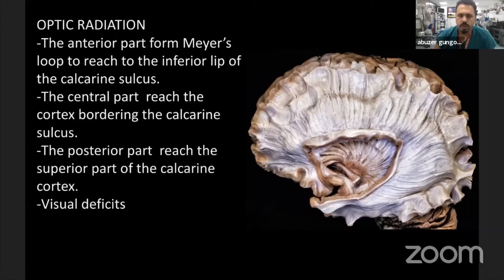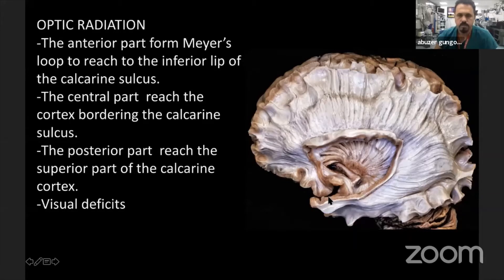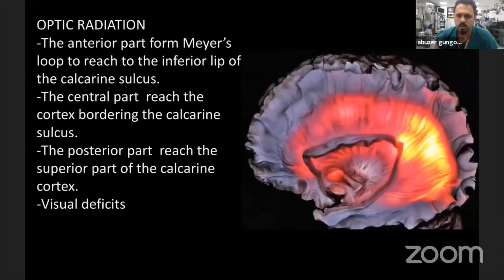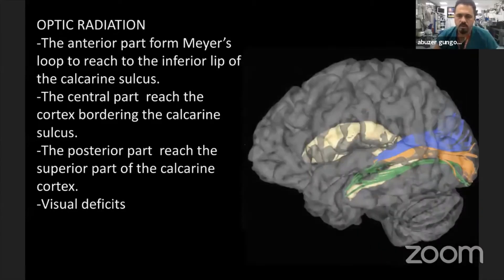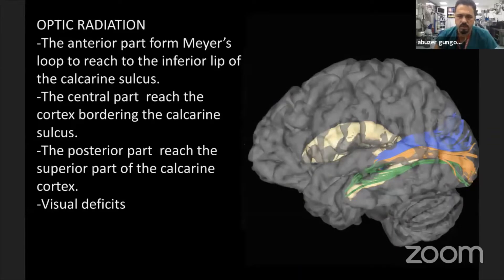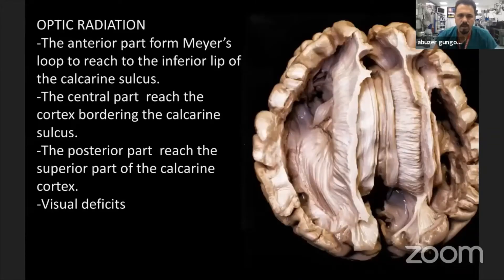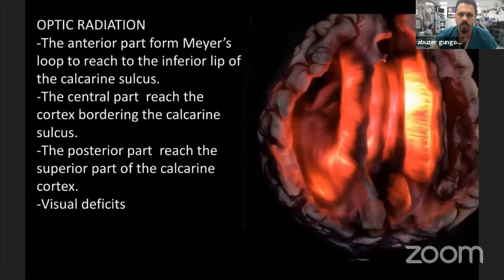After removing the posterior part of the anterior commissure, you can see the occipital commissure. The optic radiation runs from the lateral geniculate body through Meyer's loop to the occipital lobe. You can see its relationship with the ventricles and with tractography, as well as its cortical relationship. From the superior view, the optic radiation covers the lateral part of the atrium and temporal gyri.